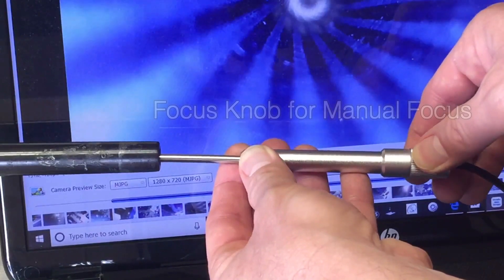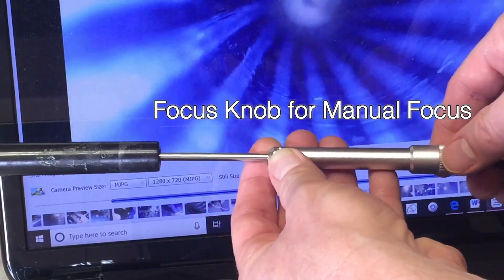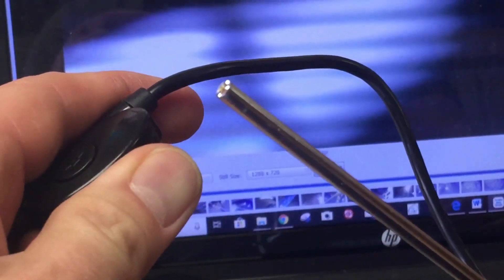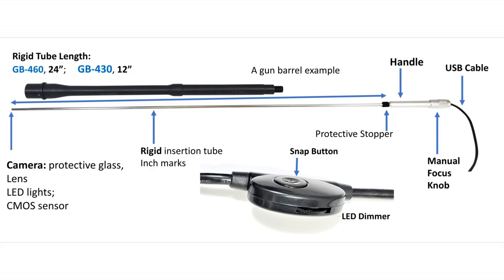The boroscope is manually focused by twisting the focus knob to get the best picture. The lighting intensity can also be adjusted with the LED dimmer and photos can be taken with the snap button.